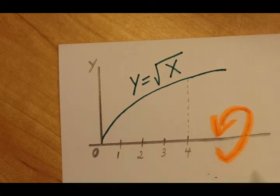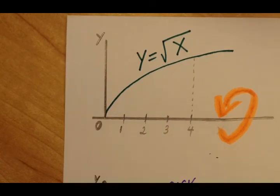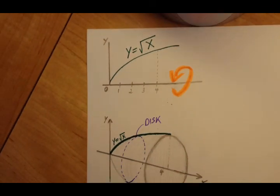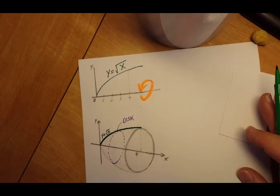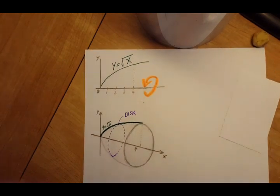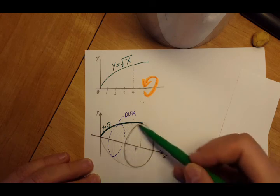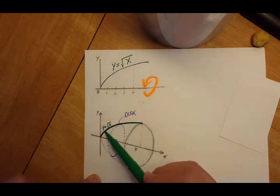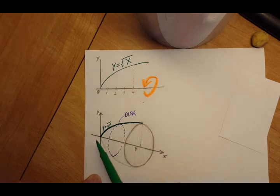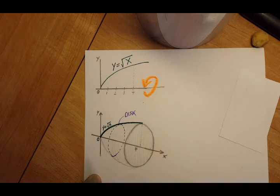We're going to revolve it around the x-axis, and once we do that, this is what we're gonna get. It's gonna be a cone-type shape where the bottom is a circle and it gets thinner and thinner as it gets to the top, and we're gonna place its top right here at point 0.